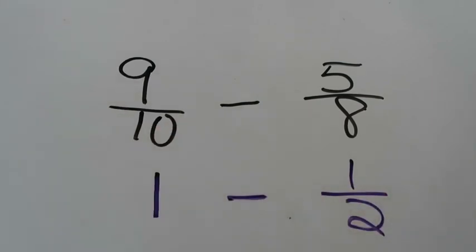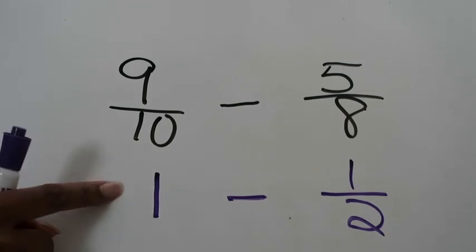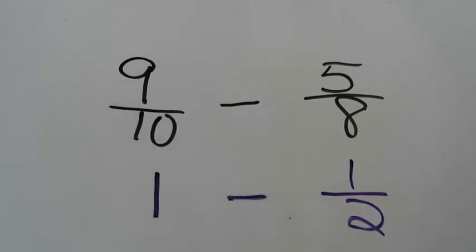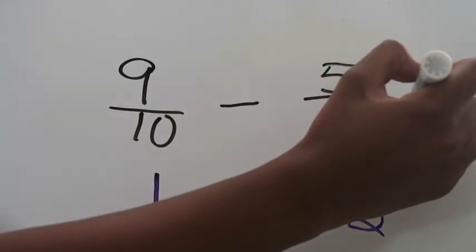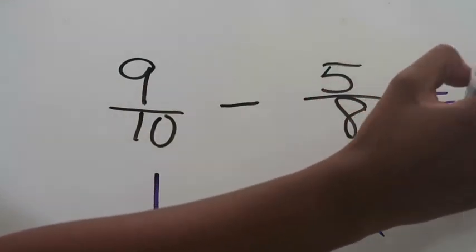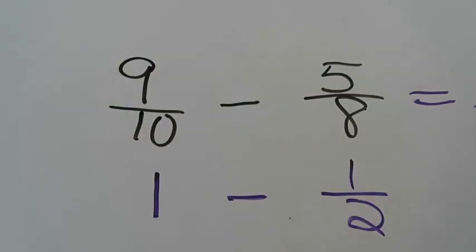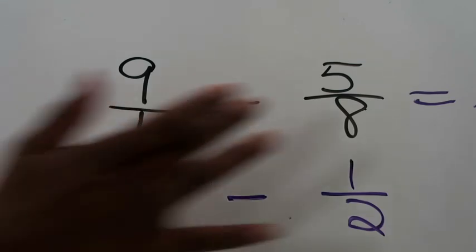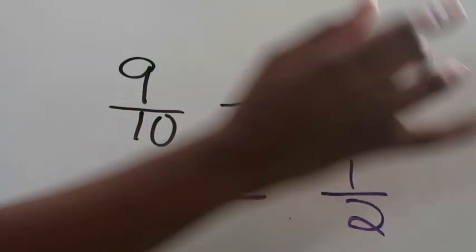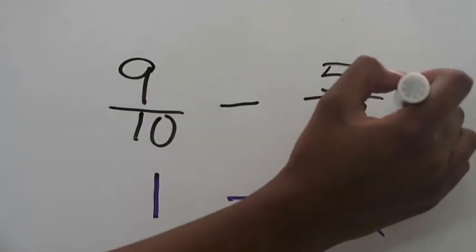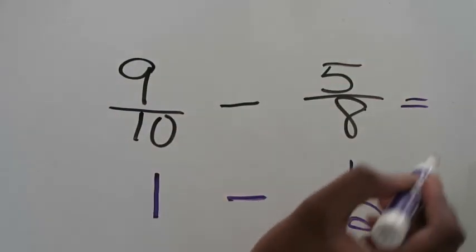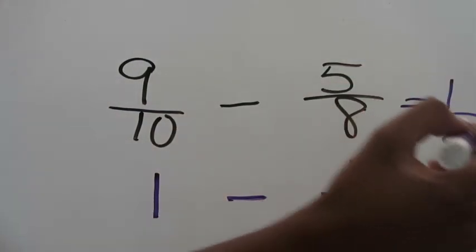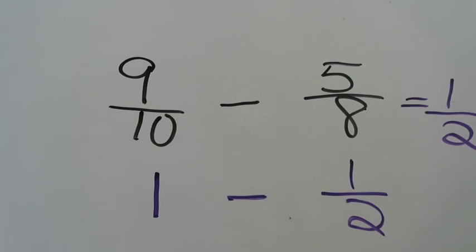Now I'm going to take my two estimated numbers and subtract them. One minus a half is going to equal a half, which tells me the estimated answer to nine tenths minus five eighths is going to be about one half. That would be my estimated answer.